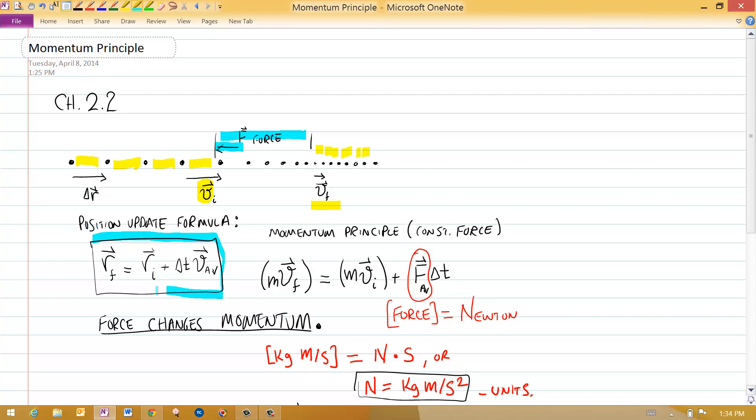We have this basic definition of what the velocity does to the position. Your book calls this the position update idea. So the final position of an object is equal to its initial position, plus however much time went by, times the quantity, the physical quantity, that changes the position. That's where the velocity is. The velocity is responsible for changing the position.